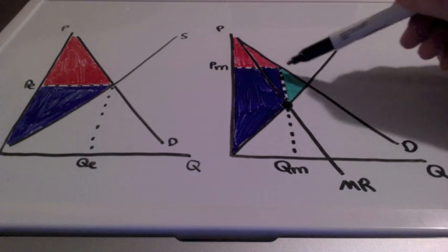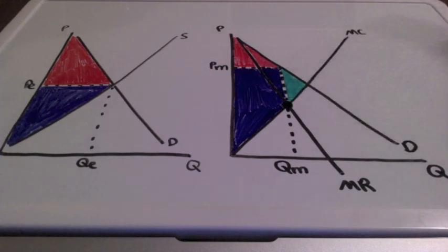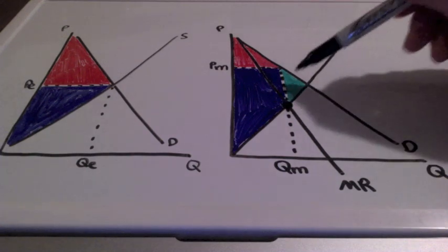So the area that is shaded in green represents the inefficiency of a monopoly, the deadweight loss.